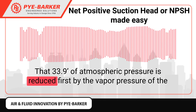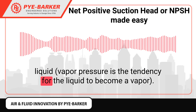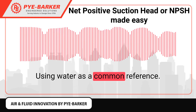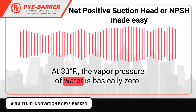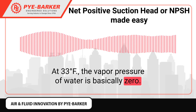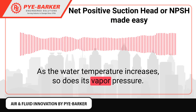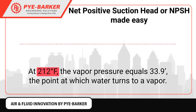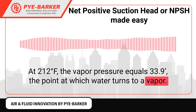That 33.9 feet of atmospheric pressure is reduced first by the vapor pressure of the liquid. Using water as a common reference, at 33°F the vapor pressure of water is basically zero. As the water temperature increases, so does its vapor pressure. At 212°F, the vapor pressure equals 33.9 — the point at which water turns to a vapor.